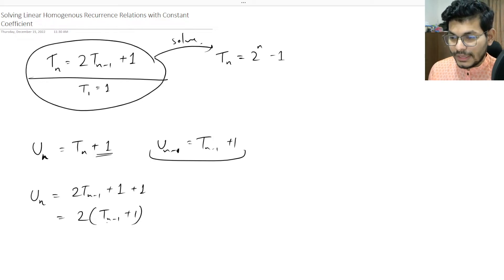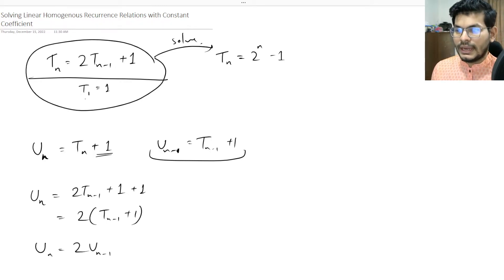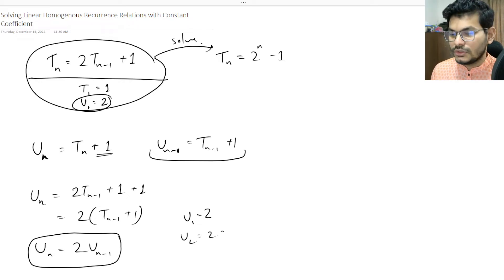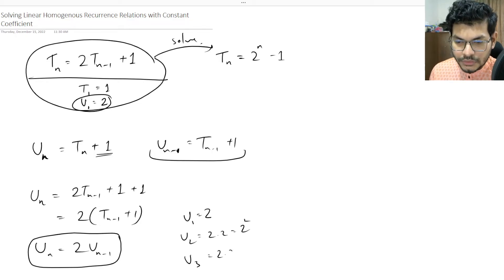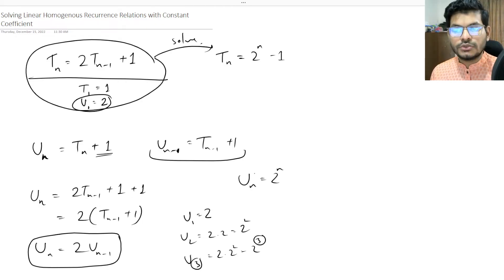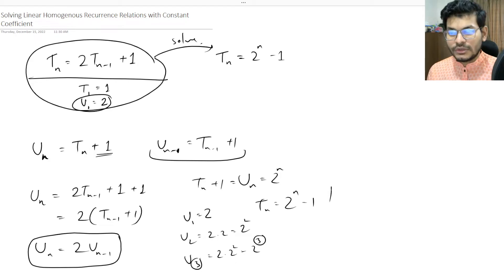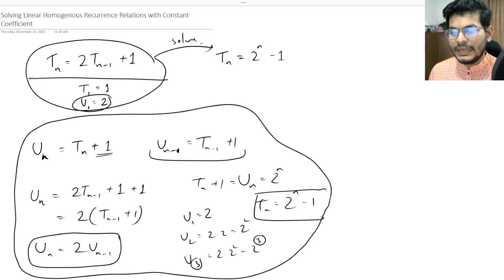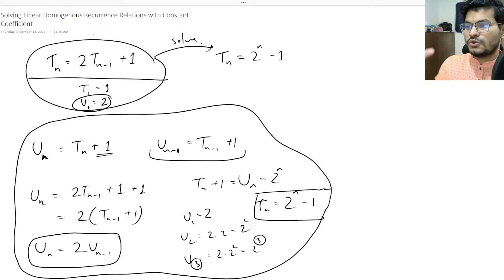With u(n) = 2·u(n-1) and u(1) = T(1) + 1 = 2, we can easily see that u(n) = 2^n. From u(1)=2, u(2)=4=2², u(3)=8=2³, and so on. Therefore T(n) = u(n) - 1 = 2^n - 1. This is an ad hoc approach using a clever substitution variable.